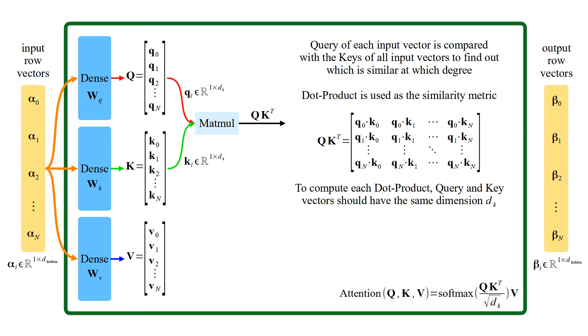To compute each dot product, query and key vectors should have the same dimension dk. Value vectors may have different dimension dv.